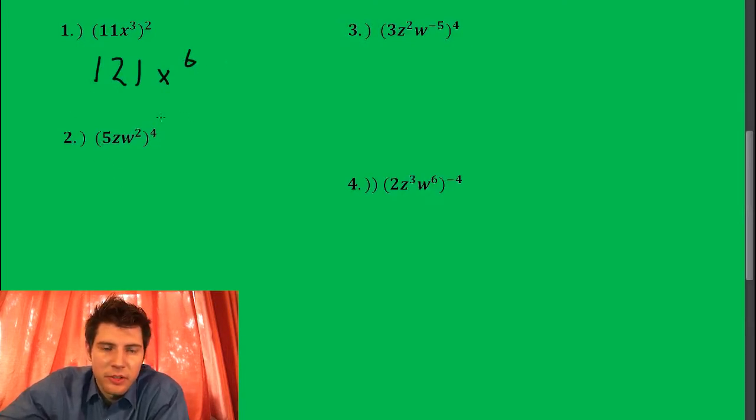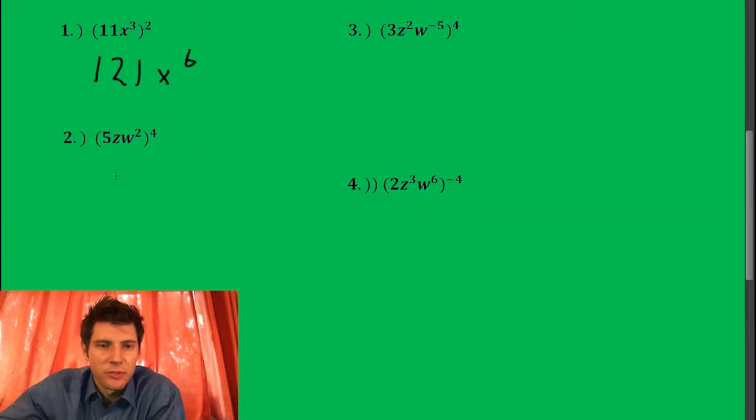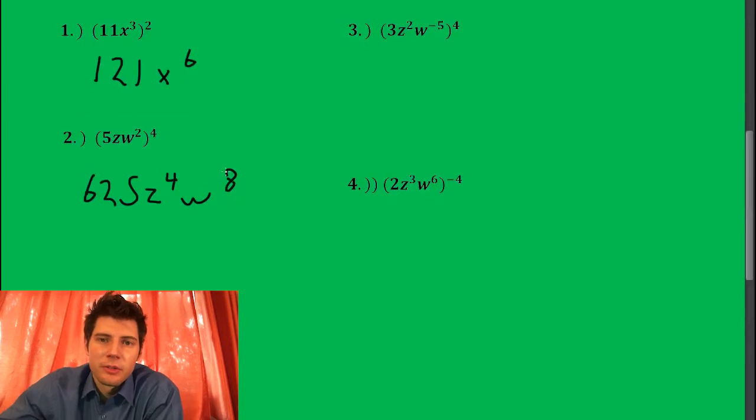Number 2, 5 to the fourth is: 5, 25, 125, 625. So 5 times itself would be 625. Then it's z to the fourth, w to the eighth. And that's it for that one.